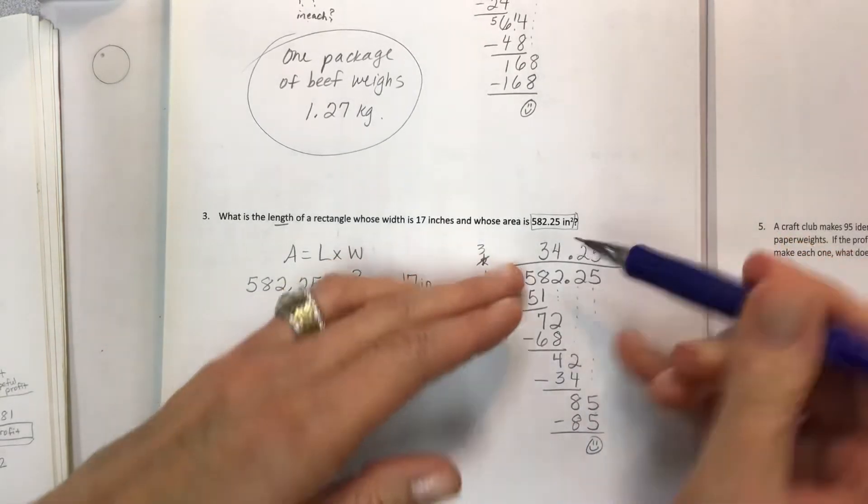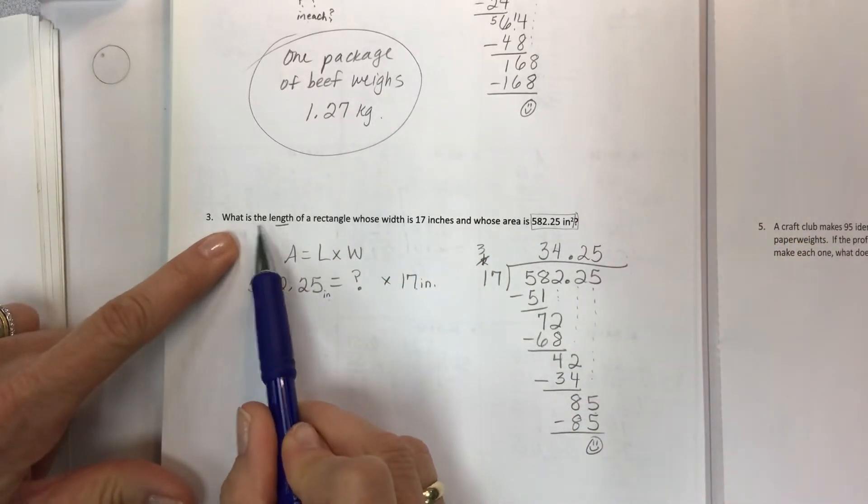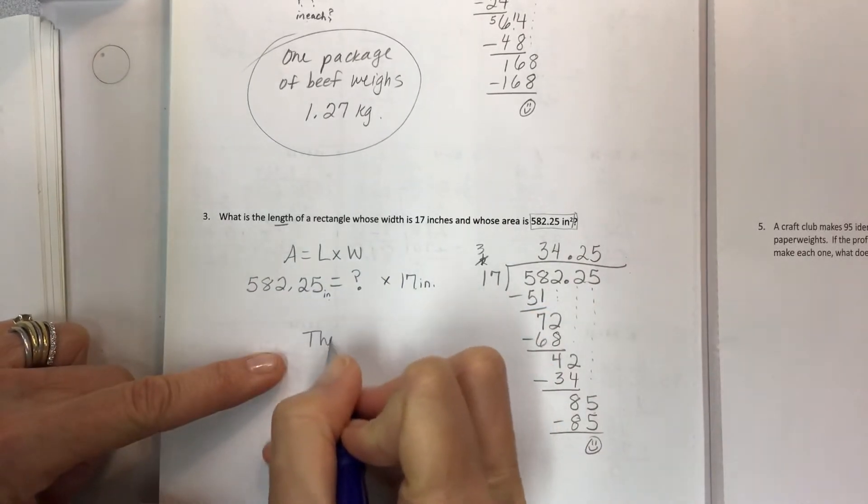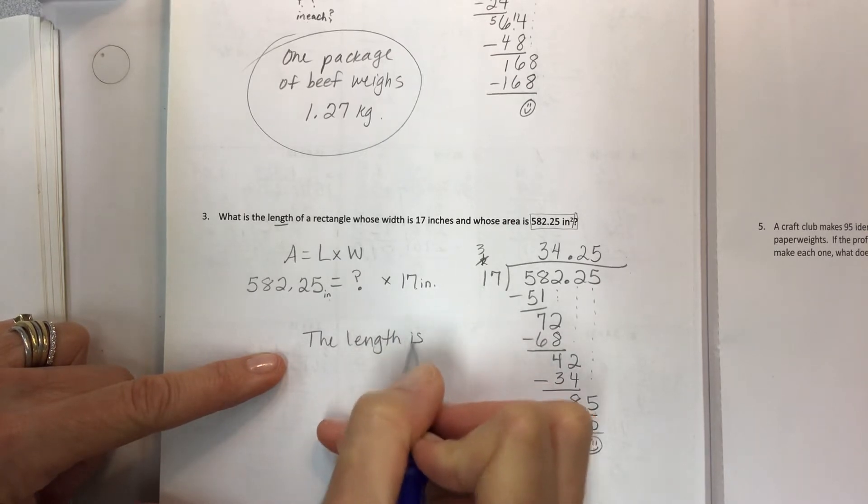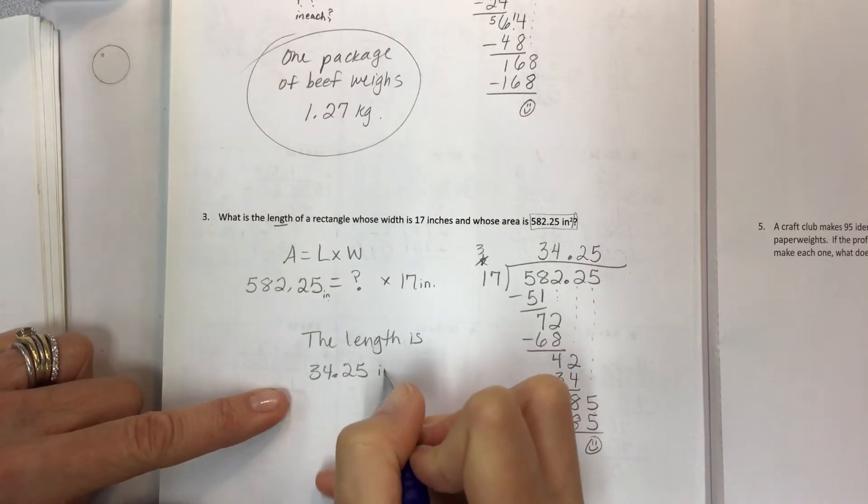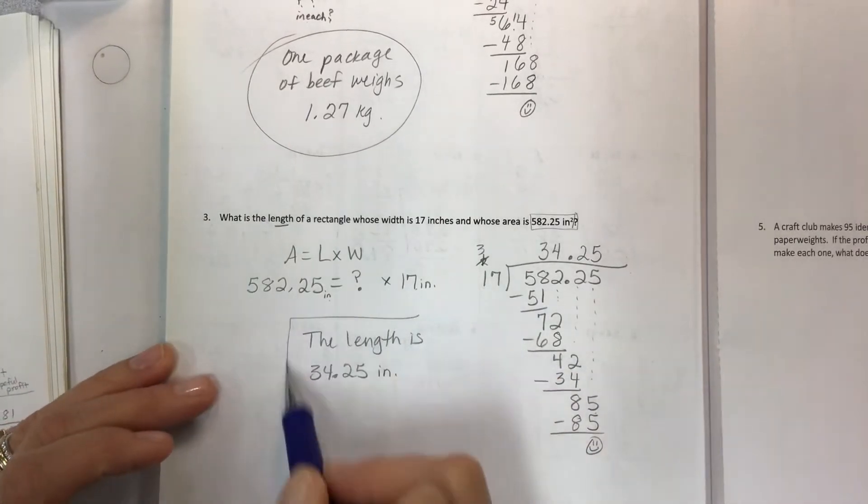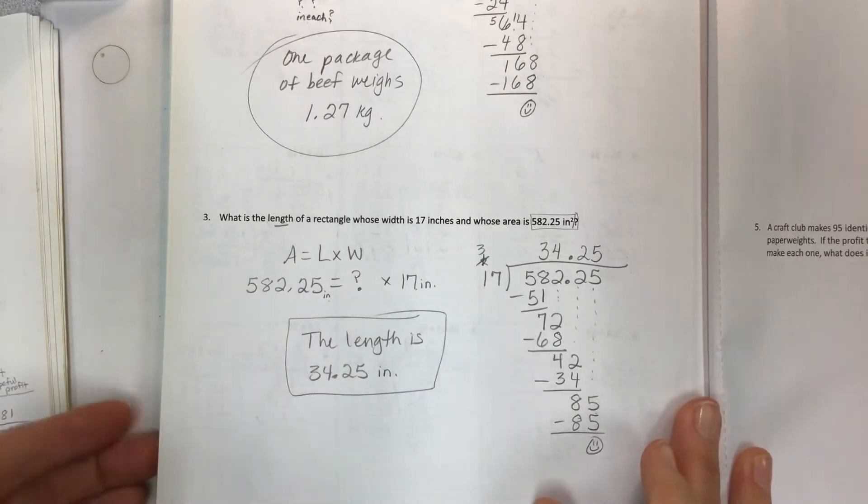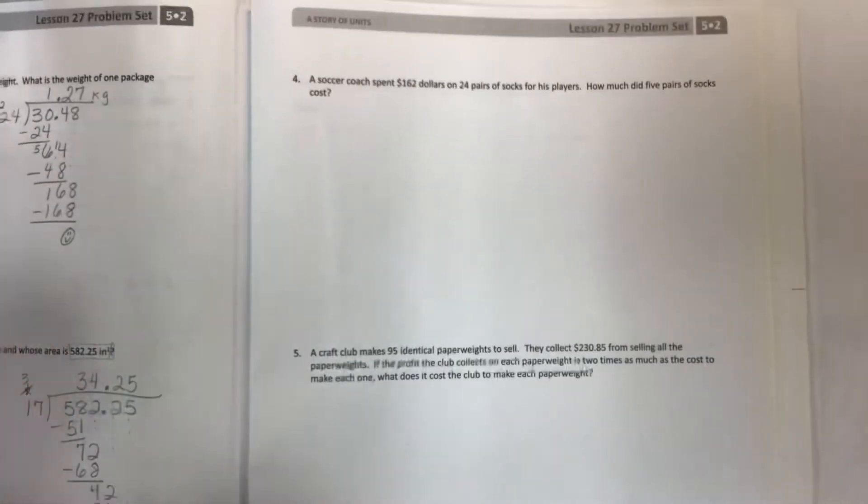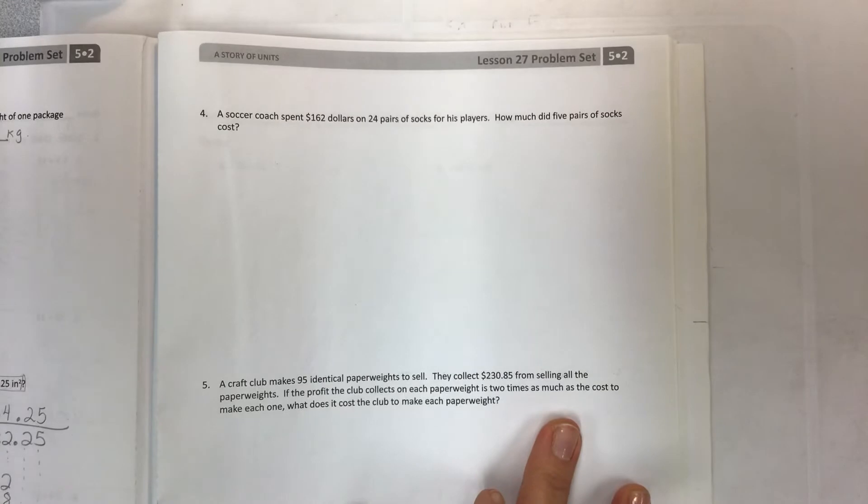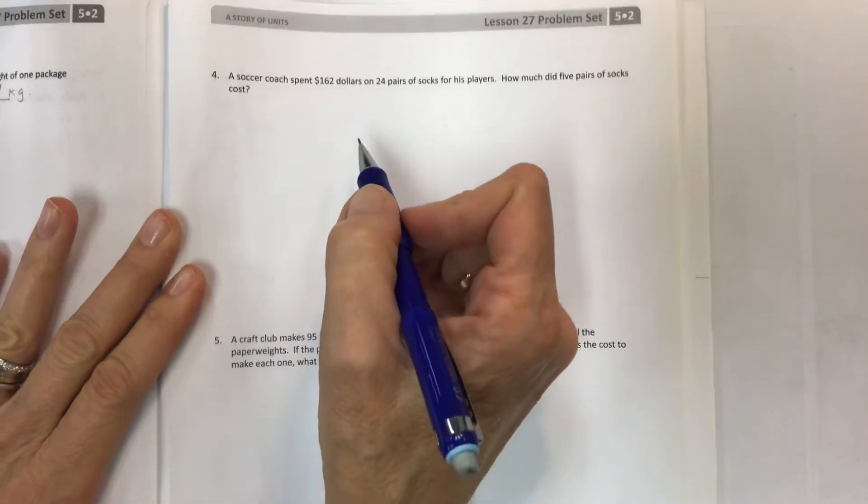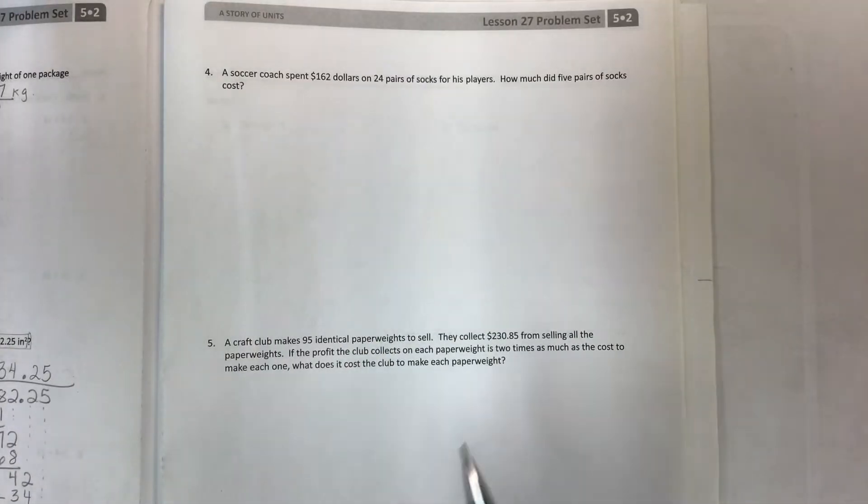So go back to the problem. What is the length of a rectangle? The length is 34 and 25 hundredths inches. Don't forget to put the inches and circle or box your answer. Now I hope these are helpful. You should really keep the volume on and listen so that you can learn how to do this stuff. I want you guys to just ace those tests.